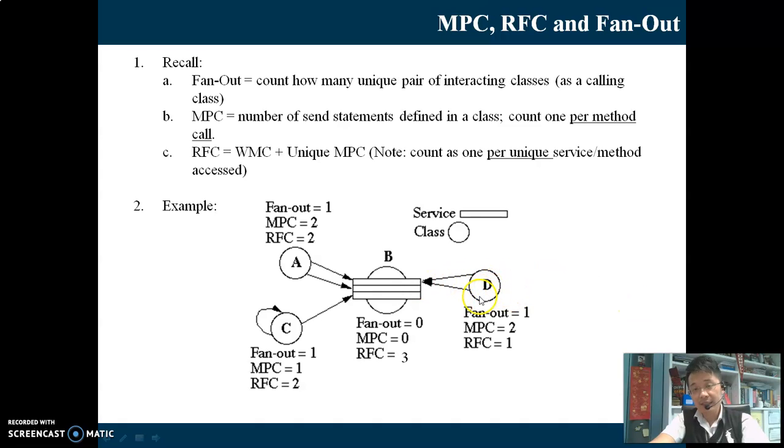In RFC, there is no method inside D. And D is calling out another method, a foreign method inside class B. Note that it is unique MPC. Unique MPC means that the target method must be a different method, must be unique. In this case, even though we have 2 method calls, they are both pointing to the same method in Class B. So, there is only one unique MPC. Thus, the RFC given by the formula WMC plus unique MPC is equivalent to 1 because WMC is 0, unique MPC is 1.